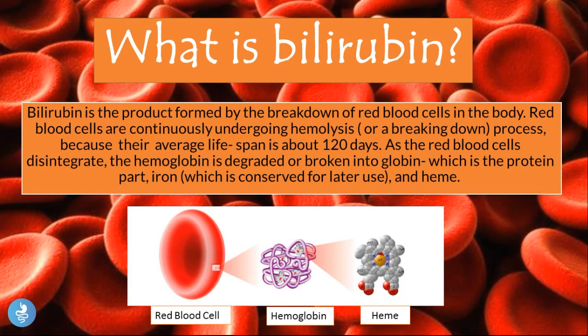What is bilirubin? Bilirubin is the product formed by the breakdown of red blood cells in the body. Red blood cells are continuously undergoing hemolysis, or a breaking down process, because their average lifespan is about 120 days. As the red blood cells disintegrate, the hemoglobin is degraded into globin, which is conserved for later use, and heme.